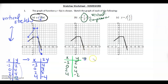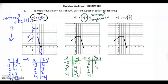A vertical compression means the horizontal numbers don't change, so the x's don't change. But the vertical numbers are halved — one half of y. We go back to the original y's and halve them: half of 2 is 1, half of 4 is 2, half of 4 is 2, half of negative 2 is negative 1. So this 2 maps down to 1, 4 maps to 2, 4 maps to 2, and negative 2 maps to negative 1.